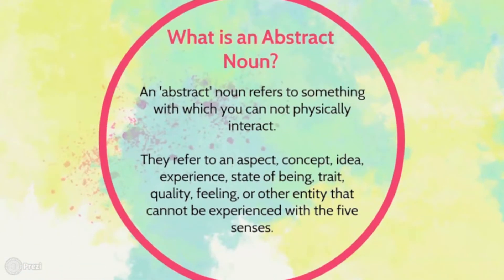An abstract noun refers to something with which you cannot physically interact. You may not be able to see it, smell it, taste it, or touch it. They refer to an aspect, a concept, an idea, an experience, a state of being, a trait, a quality, a feeling, or other entity that cannot be experienced with the five senses. So it's things that are not tangible.